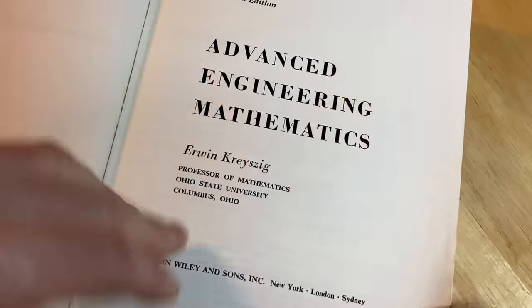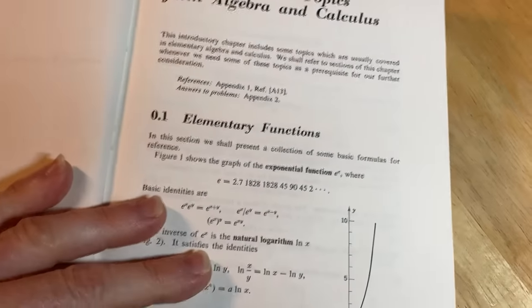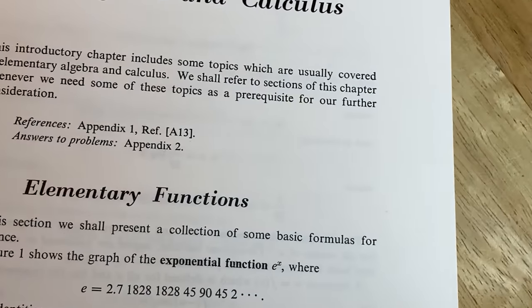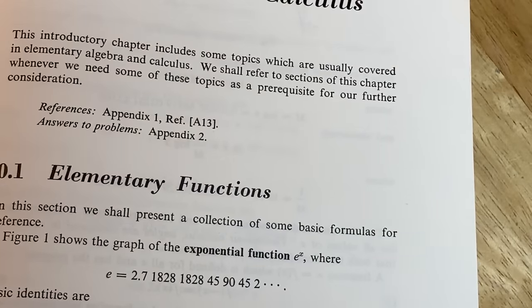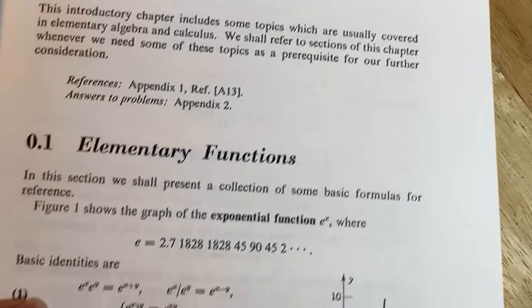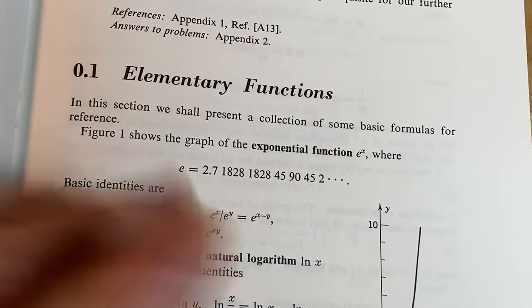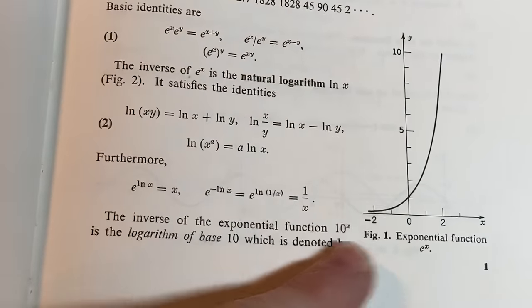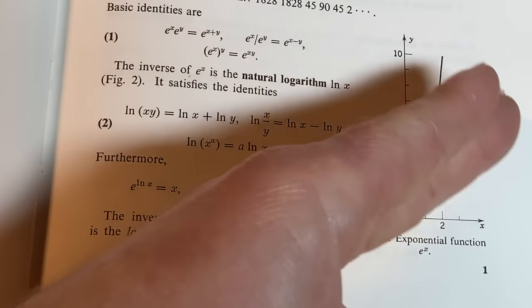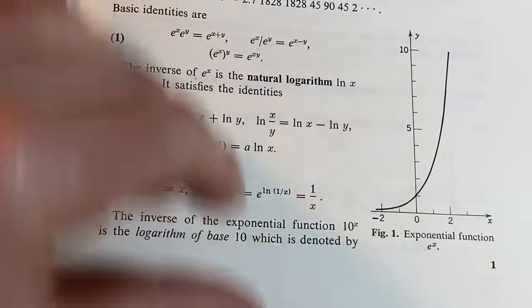So let's look at the very beginning just to show you how easy it starts out. So it starts out really simple. So even though I feel that this book can make you a so-called math expert, it starts off really simple. It says here, this introductory chapter includes some topics which are usually covered in elementary algebra and calculus. We shall refer to sections of this chapter whenever we need some of these topics as a prerequisite for our further consideration. It says, in this section, we shall present a collection of some basic formulas for reference. It talks about the exponential function, tells you what e is, some really basic identities. It tells you the inverse of e to the x is the natural log, which is really cool. If you graph them both, which he doesn't, they are reflections across each other, across the line y equals x, rather. So this is e to the x. If you draw the line y equals x here and you reflect it across y equals x, you'll get the graph of the logarithmic function. That's a property that every function and its inverse enjoy. Really cool stuff.